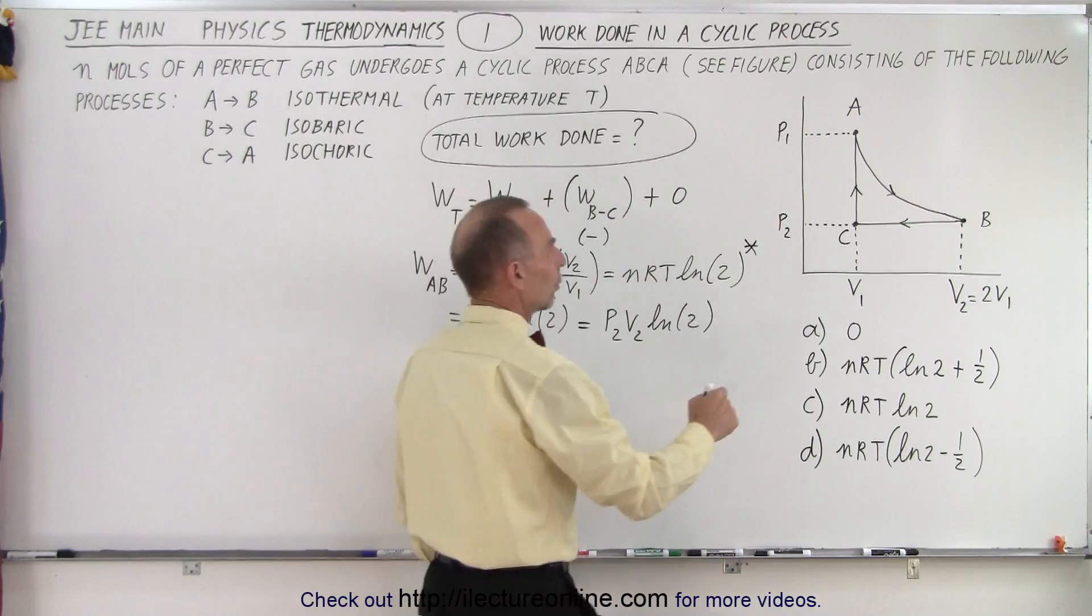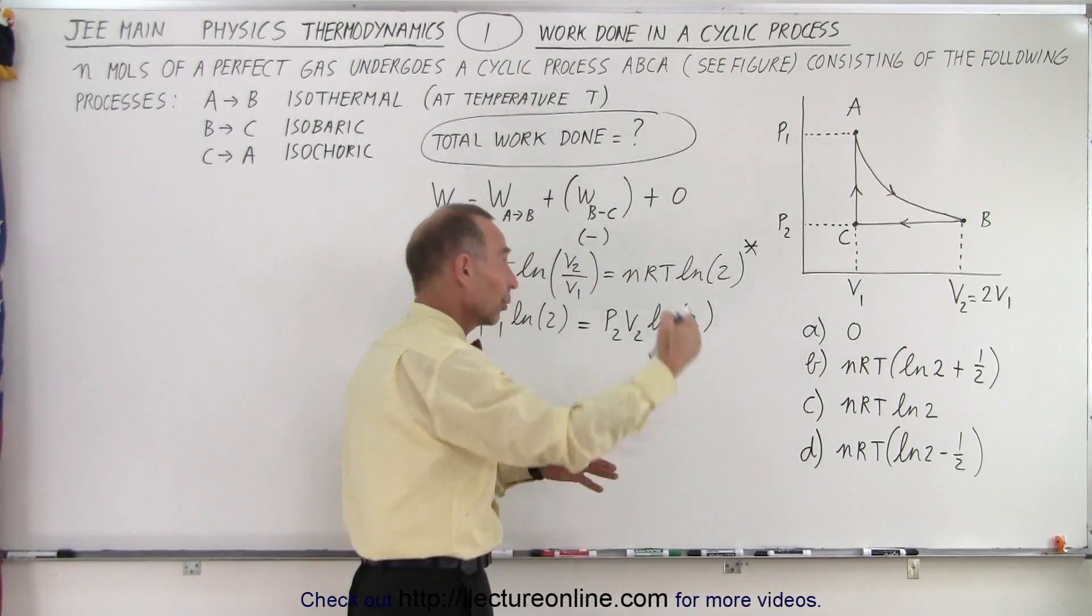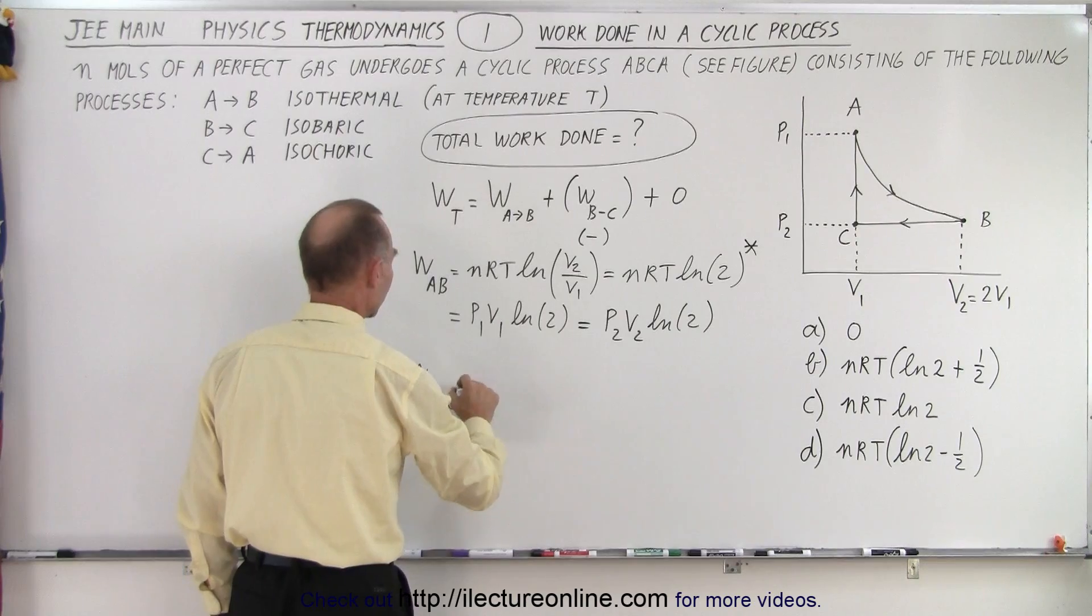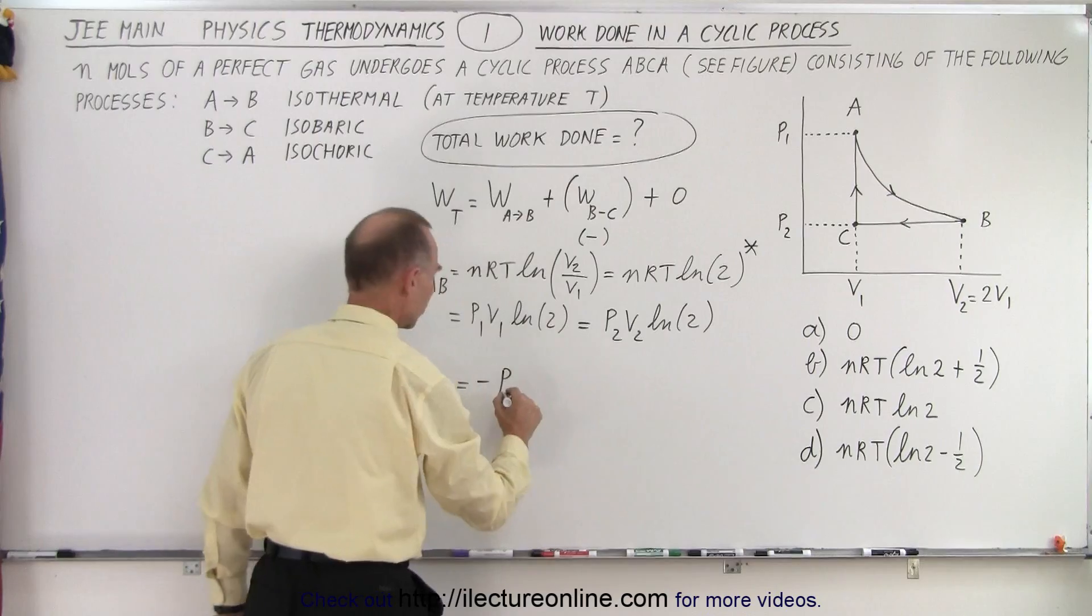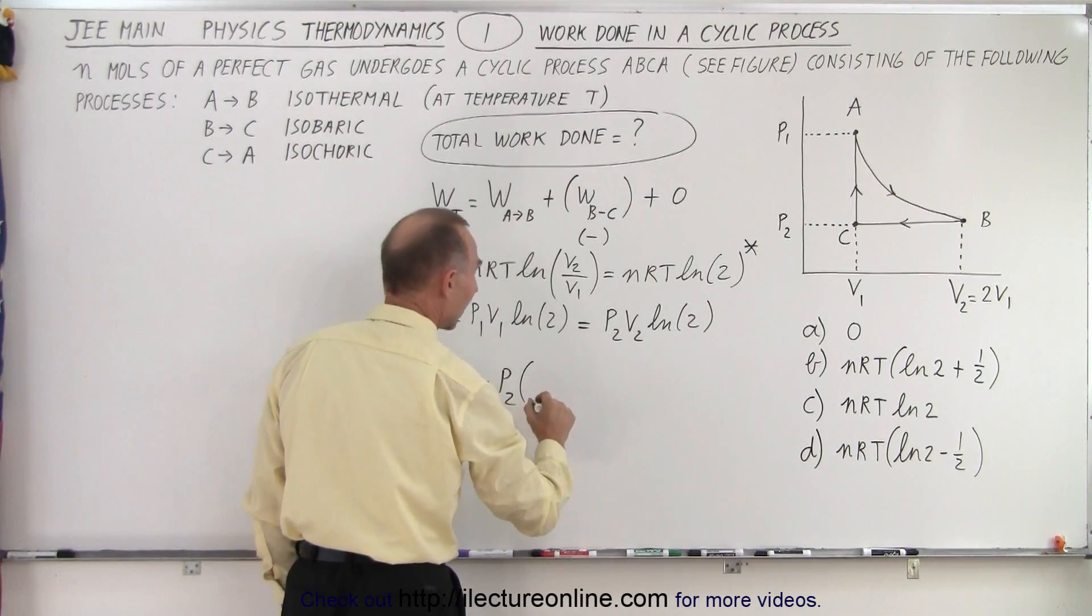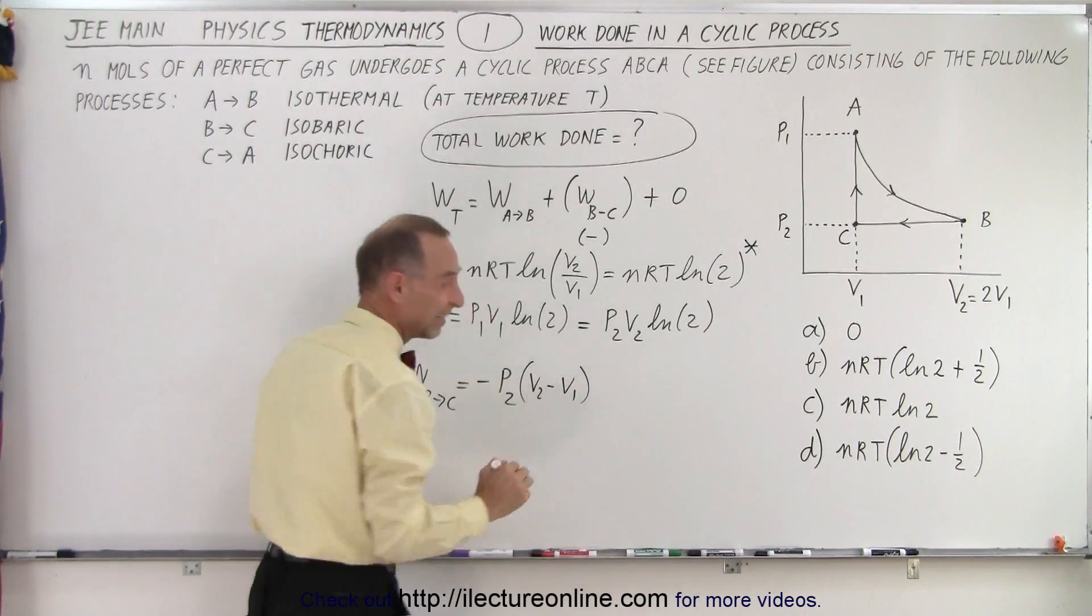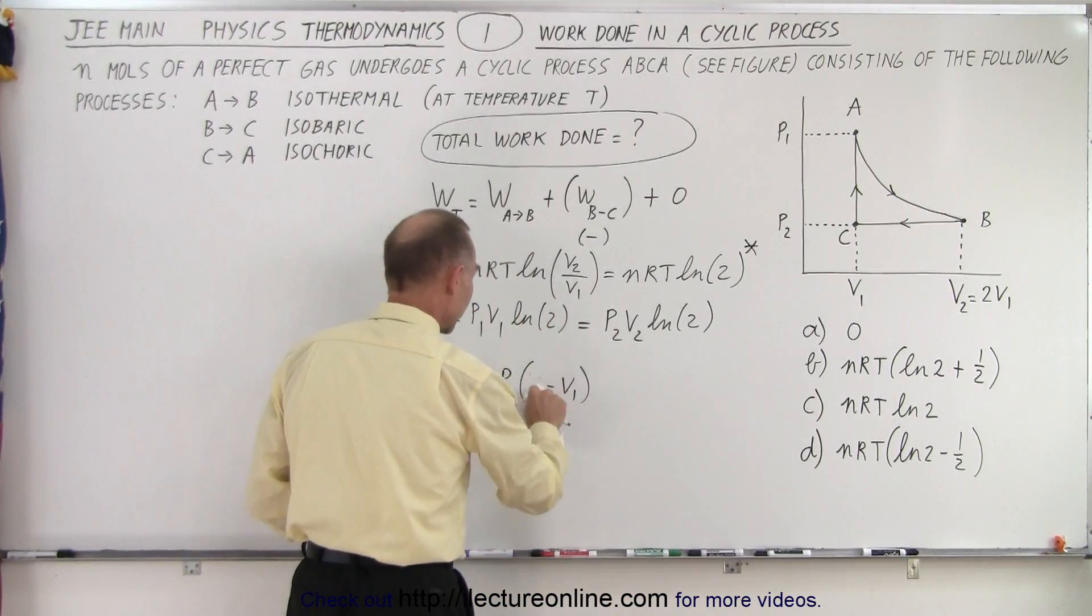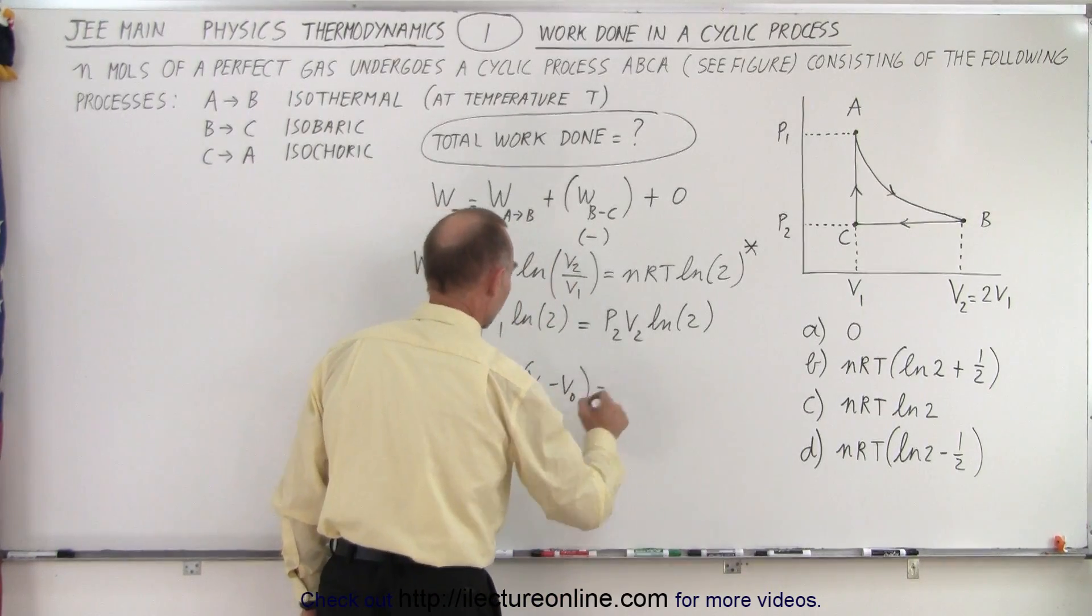What about the work done going from B to C? Now we know that's going to be negative work because we're compressing the gas. We're doing work on the gas. So the work done from B to C is going to be equal to the negative of the pressure, which is constant. In this case, it's P2 times the change in the volume, times V2 minus V1. Or better yet, the negative sign can actually be taken care of by simply getting rid of that and simply doing V final minus V initial.